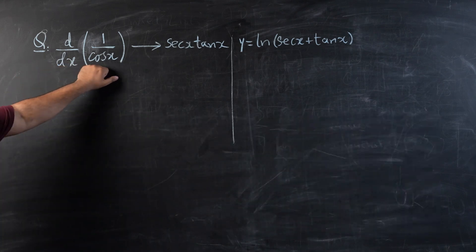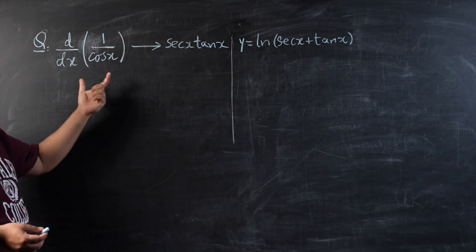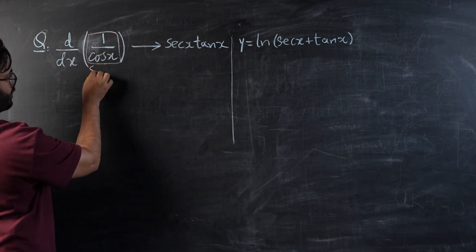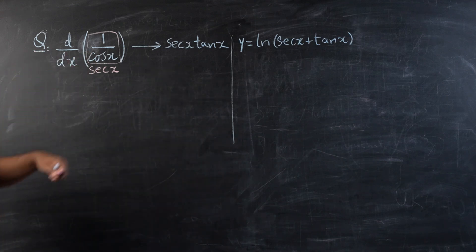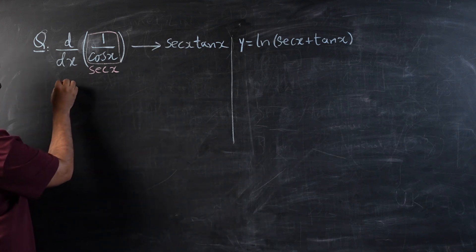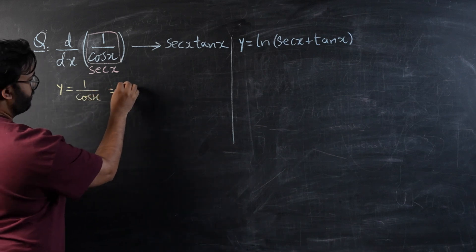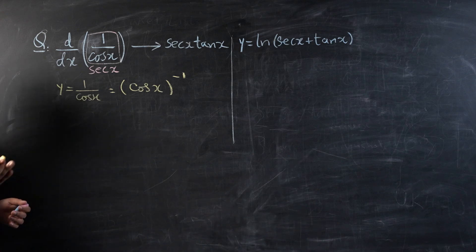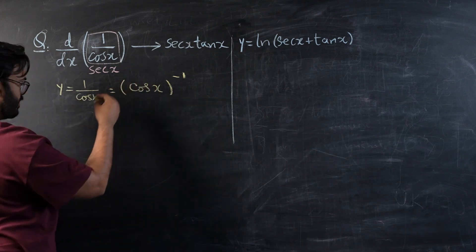The first part of the question says that if you differentiate 1 over cos x, you have to show that sec x differentiates to sec x tan x. First of all, you have to identify that 1 over cos x is sec x. So differentiating 1 over cos x is equivalent to differentiating sec x. I'm going to bring cos x into the numerator as cos x to the power of minus one. You can also apply the quotient rule — there's no harm in that — but it will take a little bit longer.